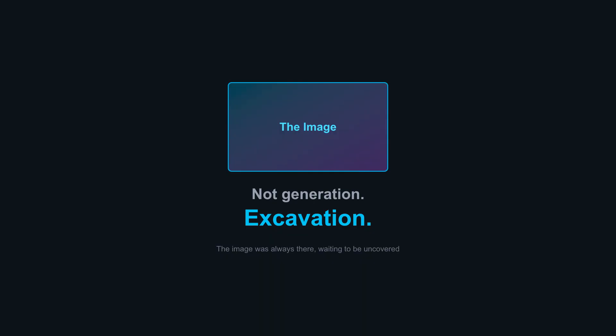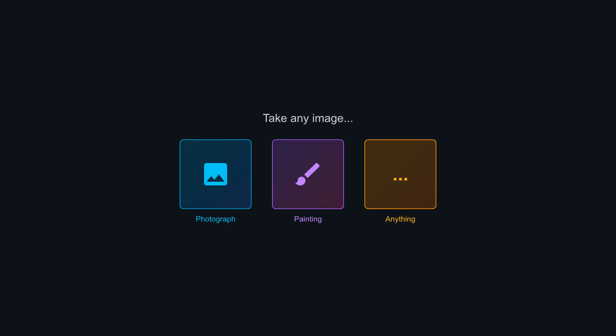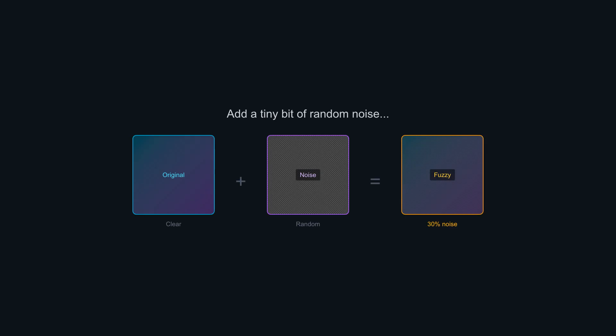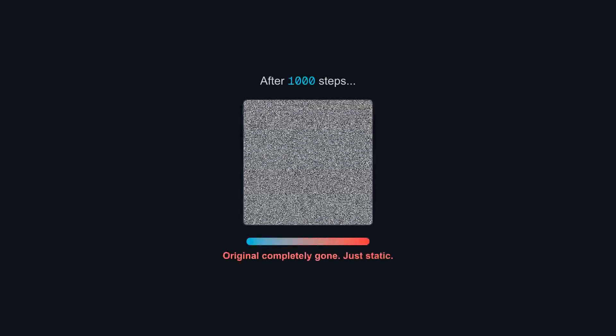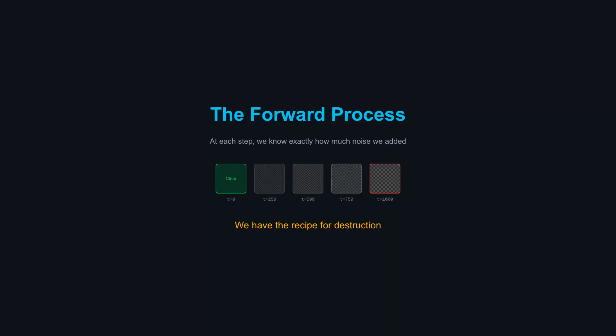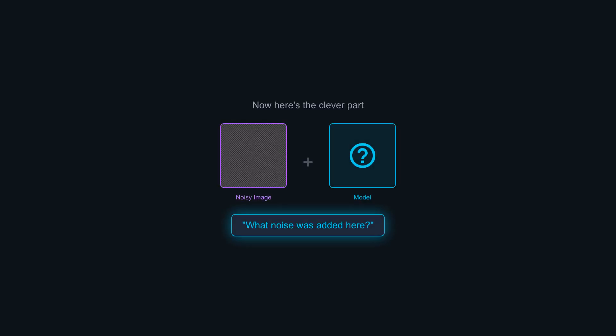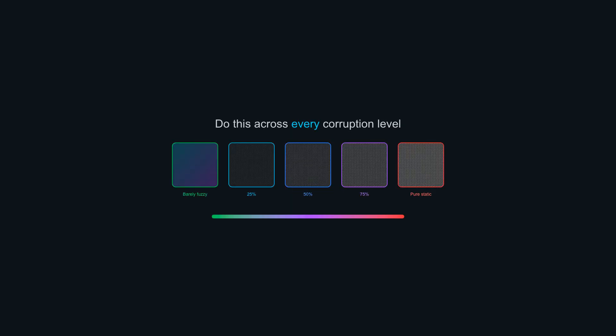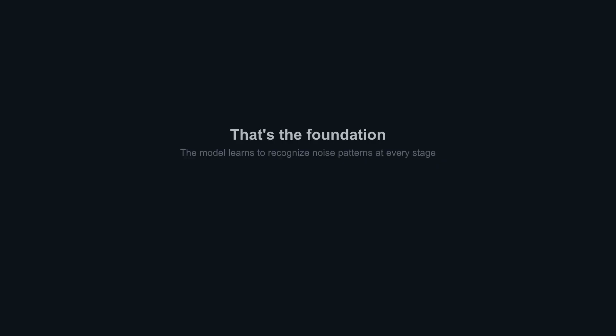The image was always there, buried in the randomness, waiting to be uncovered. Here's how training works. Take any image — a photograph, a painting, anything. Add a tiny bit of random noise. The image gets slightly fuzzy. Add more noise, and more. After a thousand steps, the original image is completely gone. Just static. This is called the forward process. At each step, we know exactly how much noise we added. We have the recipe for destruction. Now here's the clever part: we show the model these noisy images and ask, what noise was added here? Do this across every corruption level, from barely fuzzy to pure static. The model learns to recognize noise patterns at every single stage. That's the foundation — predict the noise and you can remove it.